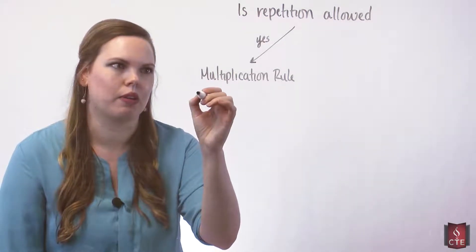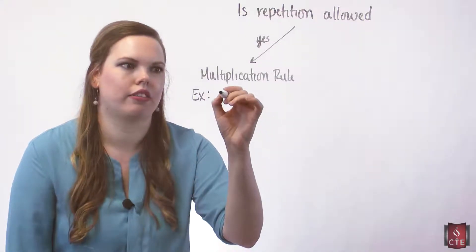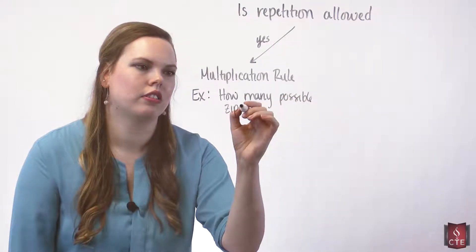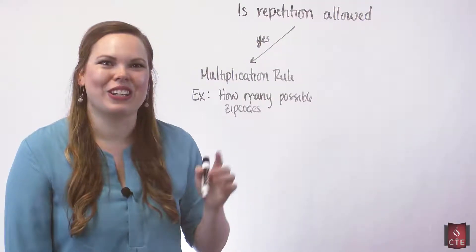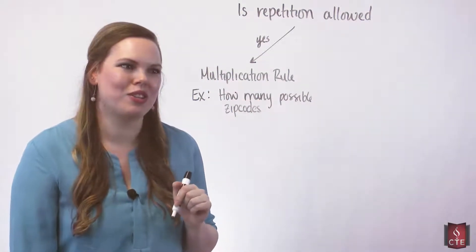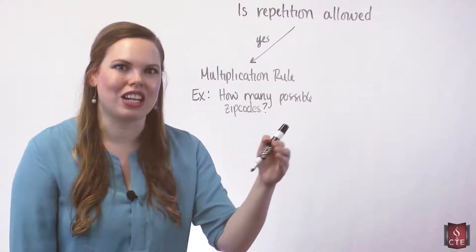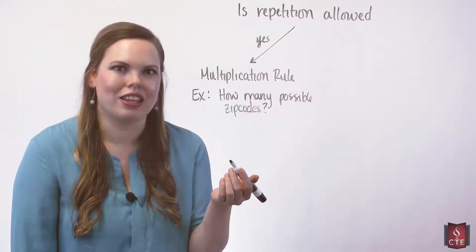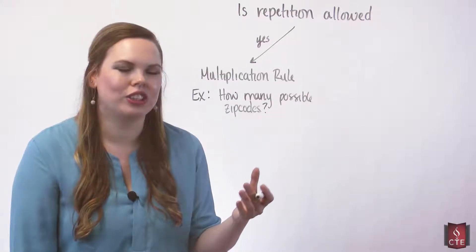Let's look at an example of the zip code problem. A zip code has five digits — how many possible zip codes are there? Zip codes do allow for repetition. For instance, the zip code 37311 uses a one twice and a one twice. So we do have repetition that is allowed, and we have to use our multiplication rule. We look at each event, and each event here would be choosing each digit. How many ways can we choose the first number? How many ways can we choose the second number? Those are our events, and we multiply the number of ways that each event can happen together.